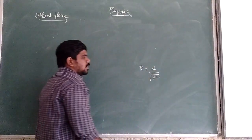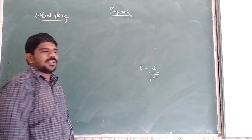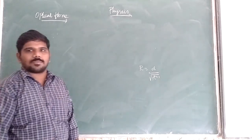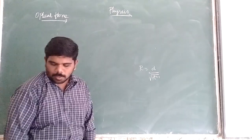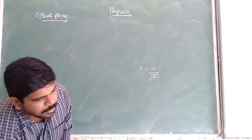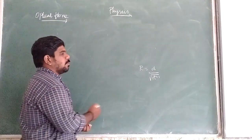The formula for the radius of Snell's window is: r = d divided by the square root of (n squared minus 1).